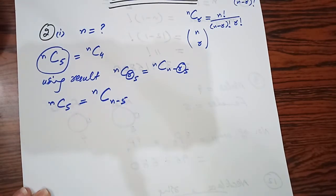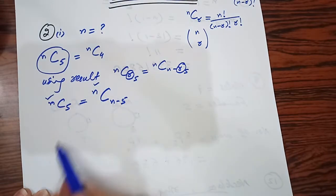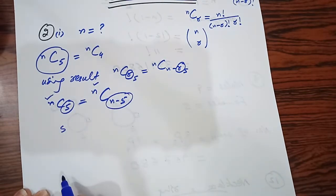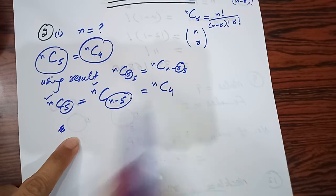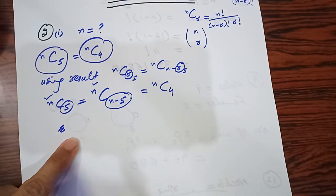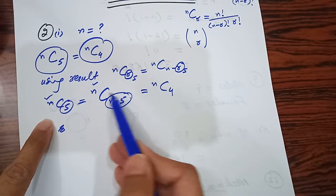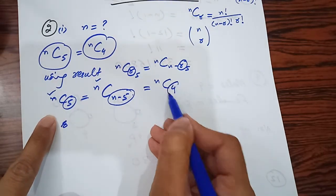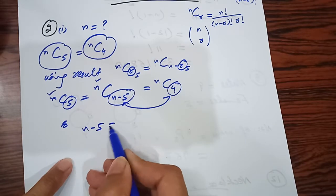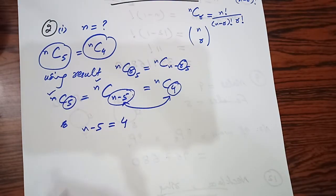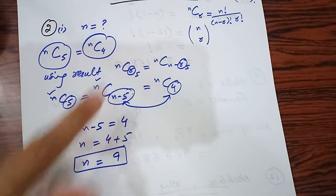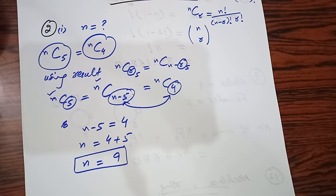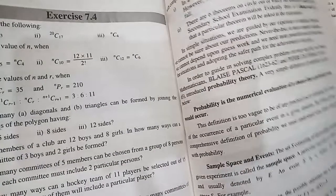Ab comparing both sides - n, n ke equal hai aur 5, n-5 ke equal aa raha hai. Yahan nc5 = nc4 diya tha, toh ncn-5 = nc4. Isliye n-5 = 4, toh n is equal to 4 plus 5 = 9. Using this result, easily humara n ki value find ho gayi. Second aur third part aapne khud try karna hai.